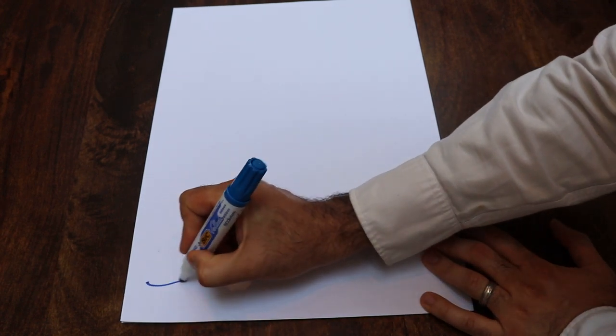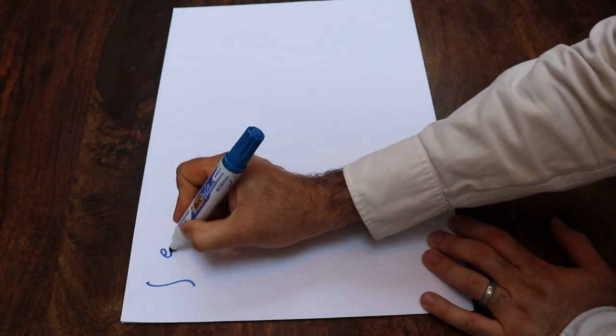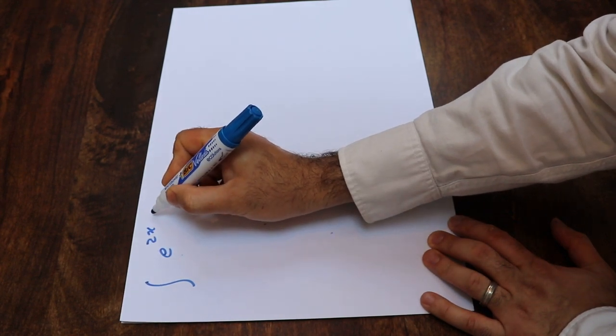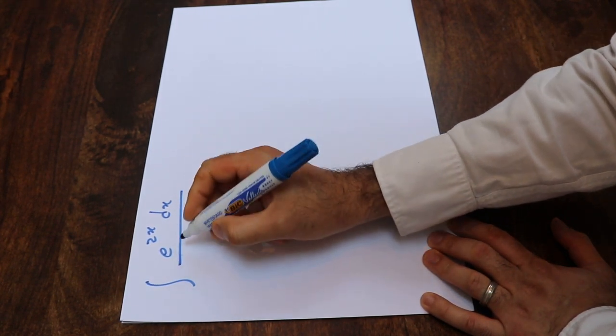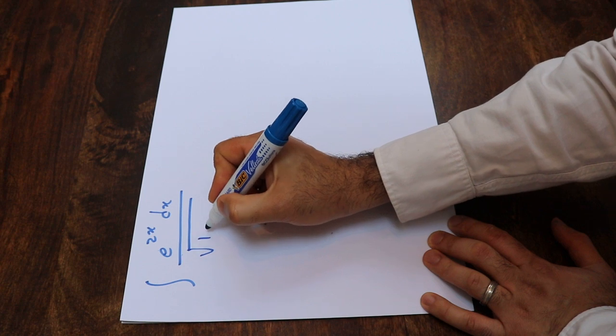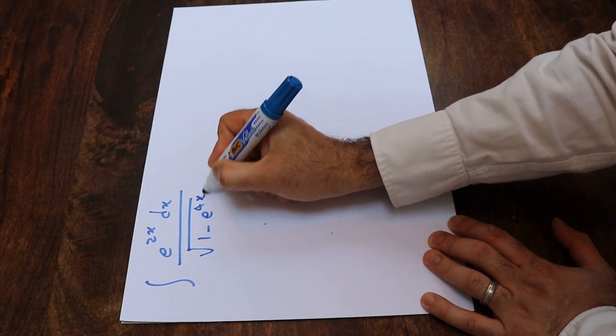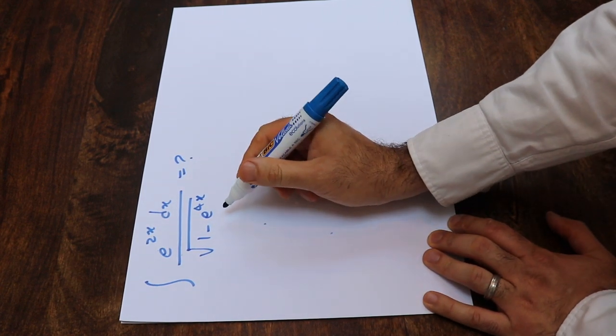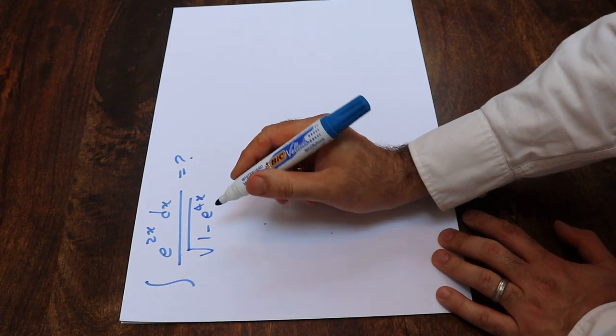Hello, today I'm going to show you how to calculate the integral of e^(2x) dx divided by the square root of 1 minus e^(4x). You can solve this integral using the substitution rule.